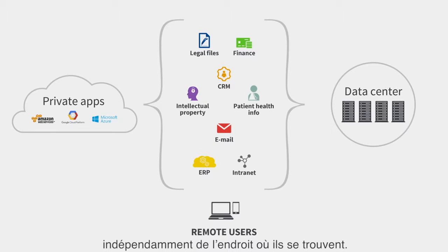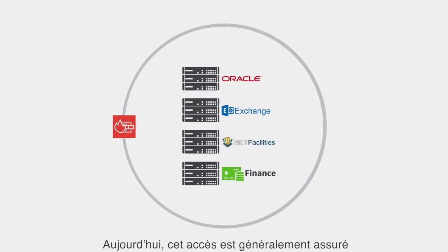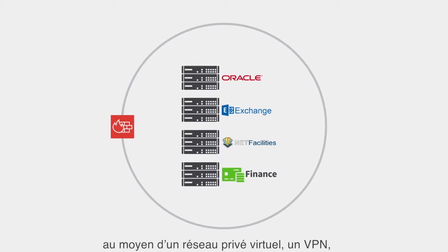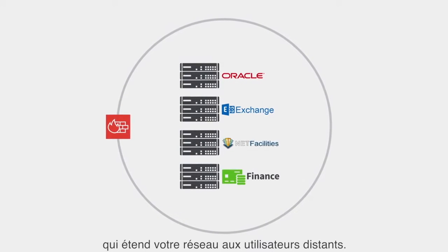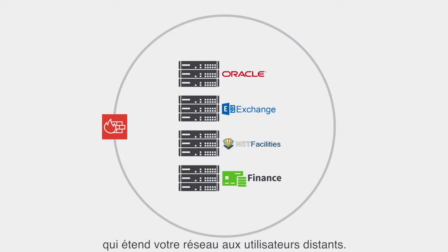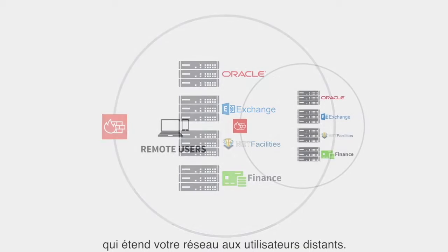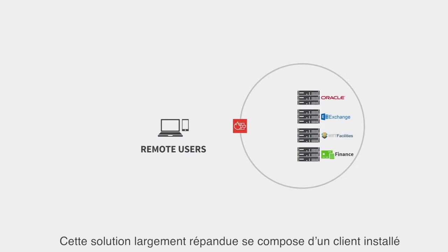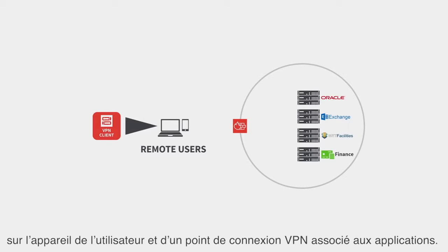You must ensure that authorized users have secure access to these mission-critical applications, no matter where they are. Today, that access is usually provided via a virtual private network, which enables application access by extending your network to remote users. This solution, well-known to most, includes clients on the user's devices and a VPN termination point in front of the applications.